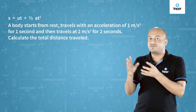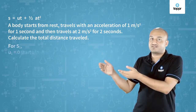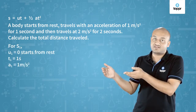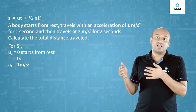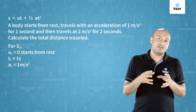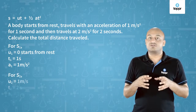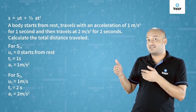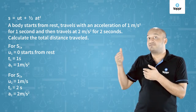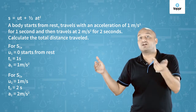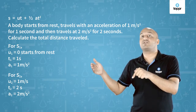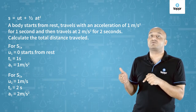So there are two scenarios. In the first scenario the body starts from rest and gains speed. In the second scenario the body already has some speed. The final speed of the first scenario will become the initial speed of the second scenario.